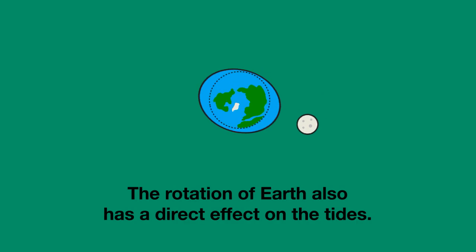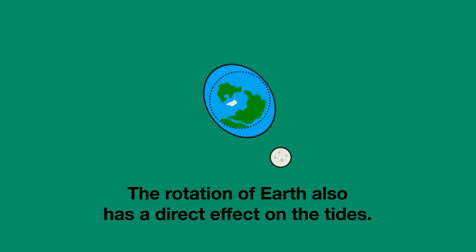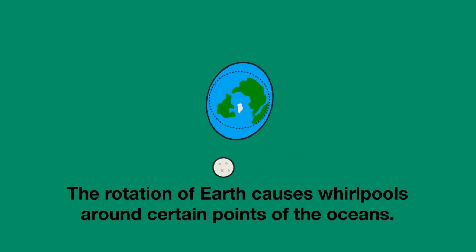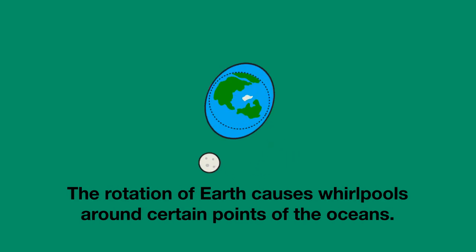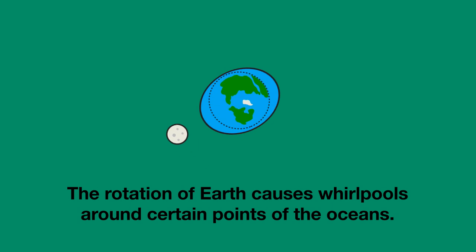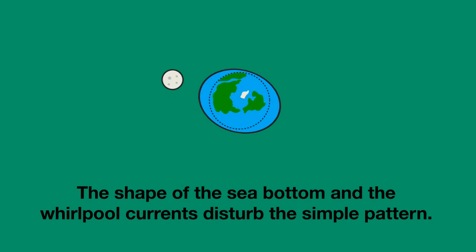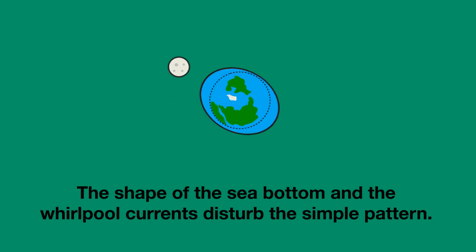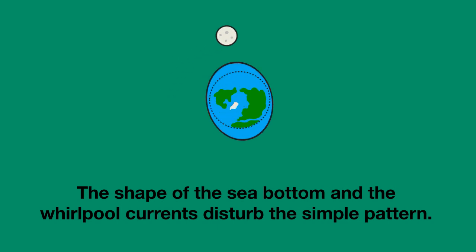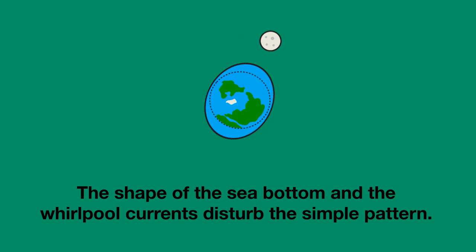The rotation of Earth also has a direct effect on the tides. The rotation of Earth causes the water in the oceans to move in big, slow whirlpools around certain points of the oceans. Together, the shape of the sea bottom and the big whirlpool currents disturb the simple two high tides, two low tides picture.